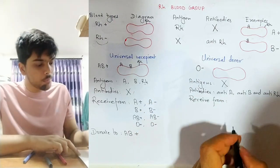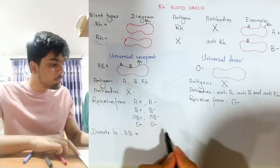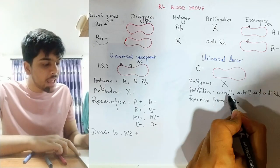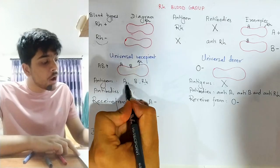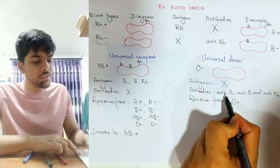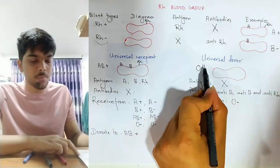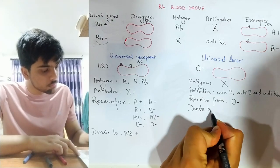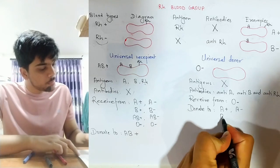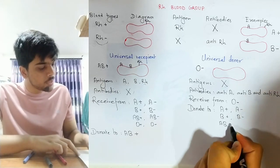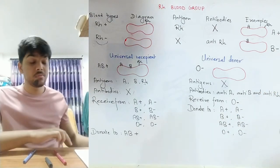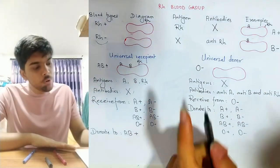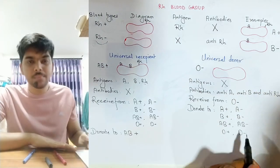O negative blood has missiles against all three antigens, so even the presence of one antigen from another blood type would cause agglutination. However, O negative can donate to A positive, A negative, B positive, B negative, AB positive, AB negative, O positive, and O negative — all blood types. That is why it is called the universal donor.